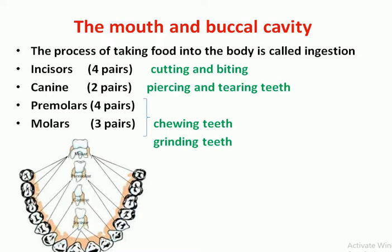Premolars and molars are useful for chewing and grinding. Premolars are 4 pairs and molars are 3 pairs.